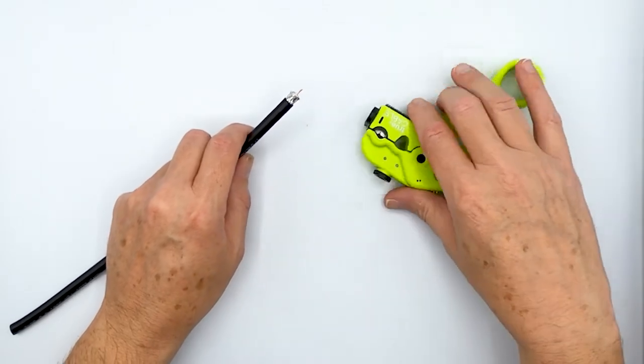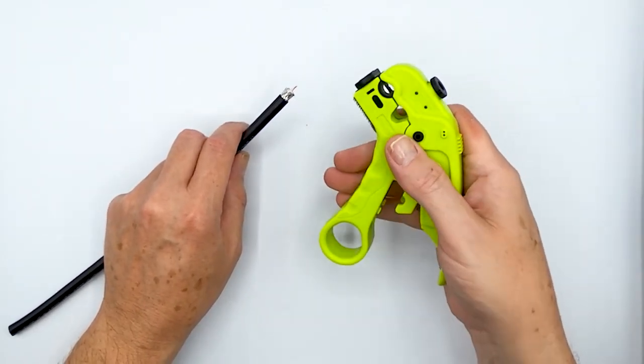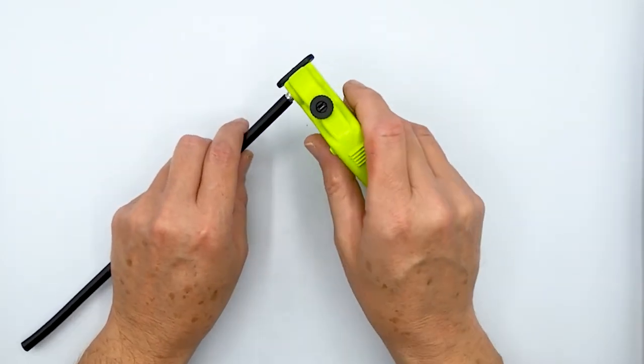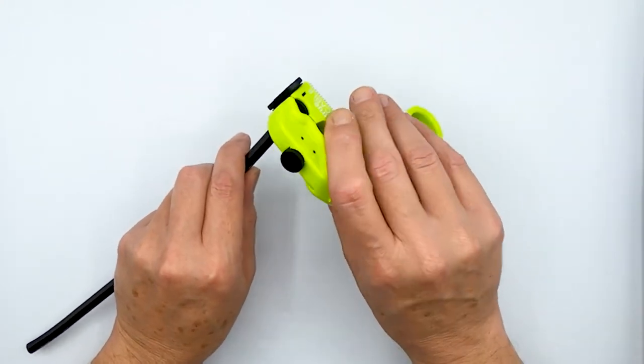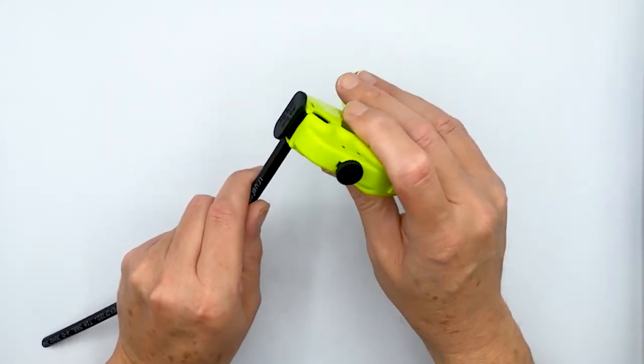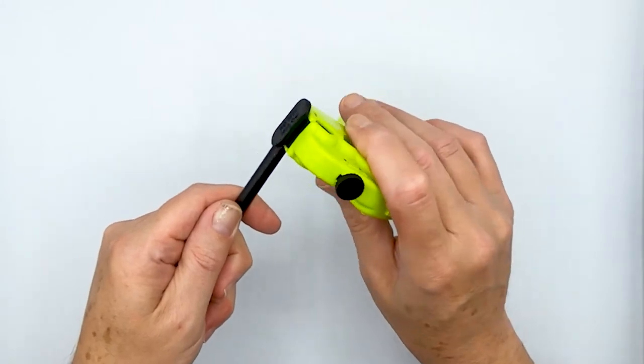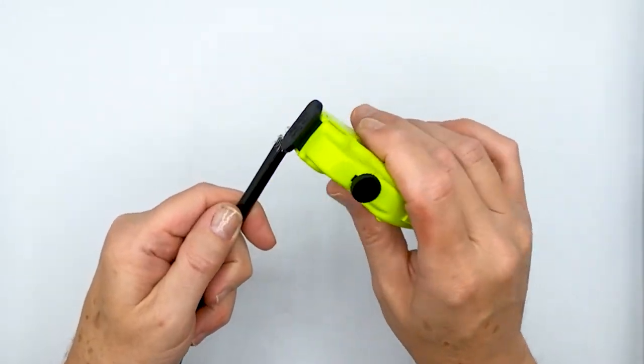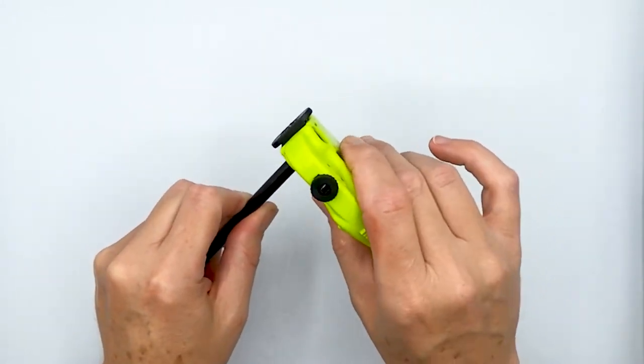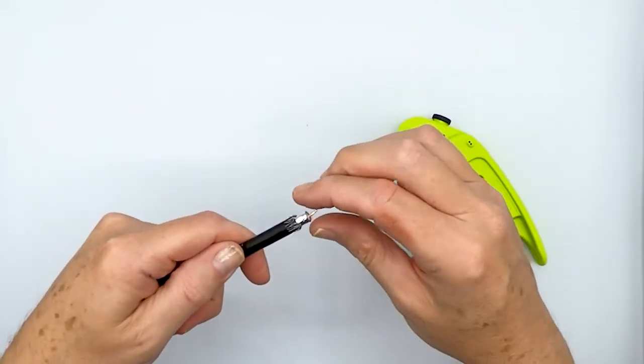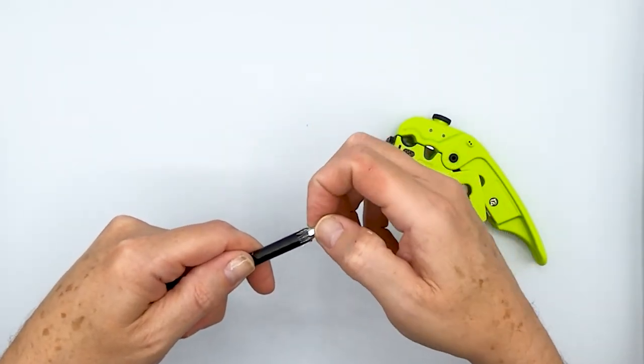If it does, you cut too much braid off. You should cut your cable and start again because this braid shield is important because it's part of the circuit for RG6 cable. However, being that this is quad shield, it does require more prep and a little more detail work than the double shield.